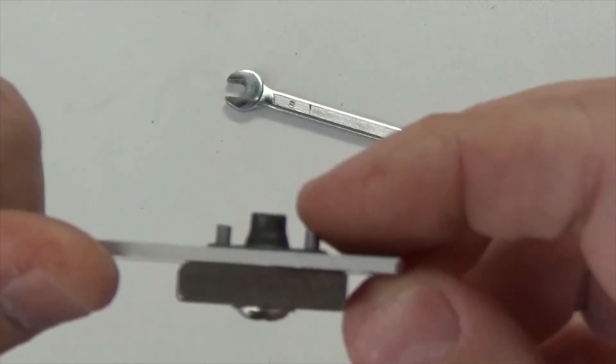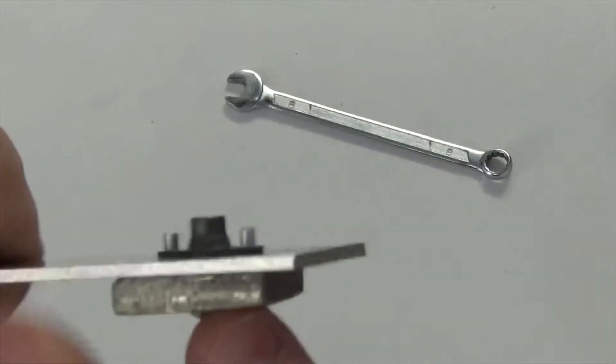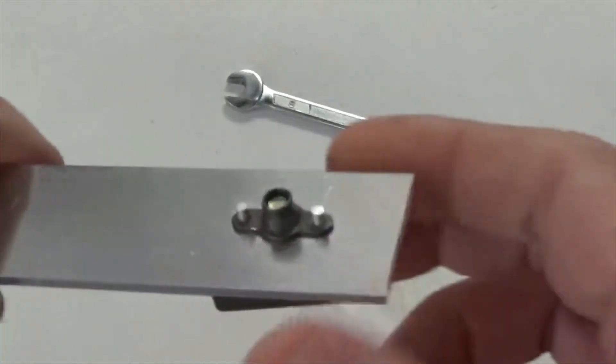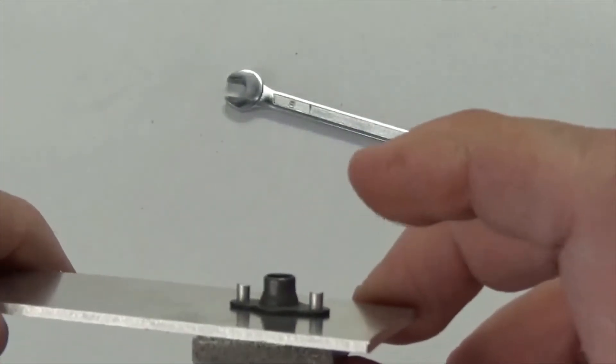And the countersunk rivet heads are pulled in and pulled up hard against the plate. So now riveting this is going to be really easy.